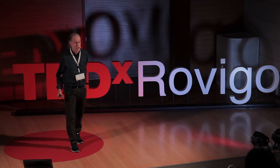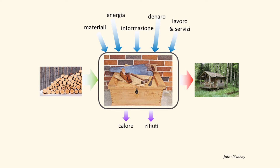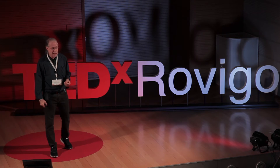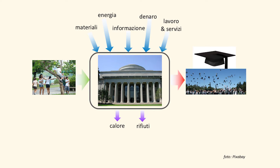Questo schema può essere applicato, ad esempio, se volete farvi una casetta di legno: prendete il legname, avete bisogno di attrezzi, di informazione, perché dovete sapere come usarli, cosa volete, come farlo. Però può essere applicato anche a sistemi completamente differenti. Questa è un'università, l'MIT, che prende dei teenager e li trasforma in laureati. Per far questo ha bisogno delle stesse cose: energia, materia, informazione, combustibili.